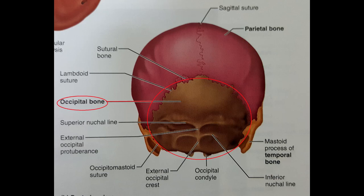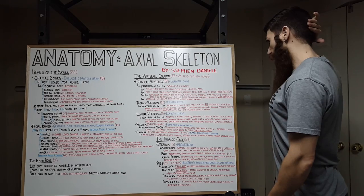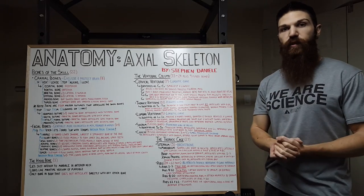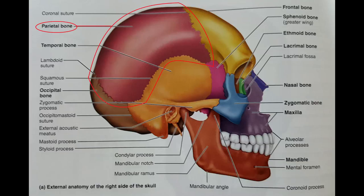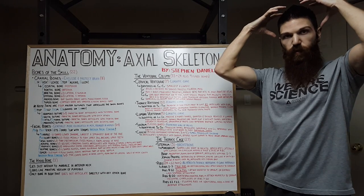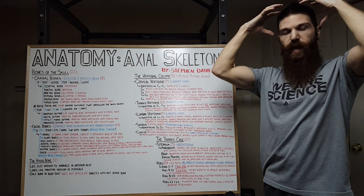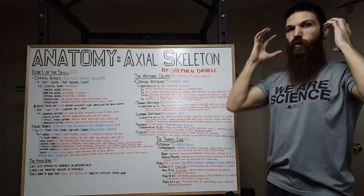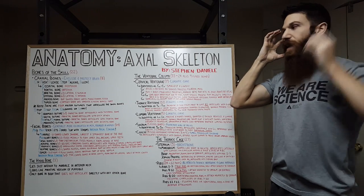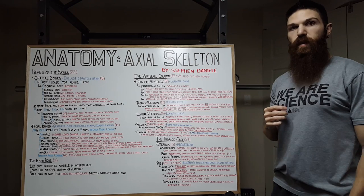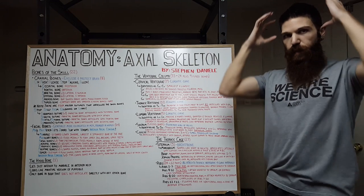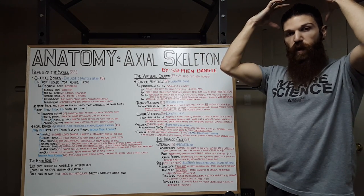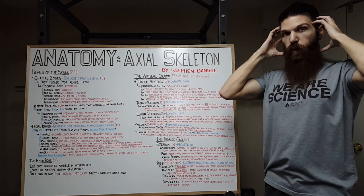They are our occipital bone, which is the posterior side of our head. We have our frontal bone, which is the anterior side of our head. We have the parietal bones — one right, one left — which form the lateral aspects of our head. We have our temporal bones, again two, one on our right and one on our left. They also form the lateral aspects of our head. The parietal bones are superior, and inferior to our parietal bones are going to be our temporal bones.